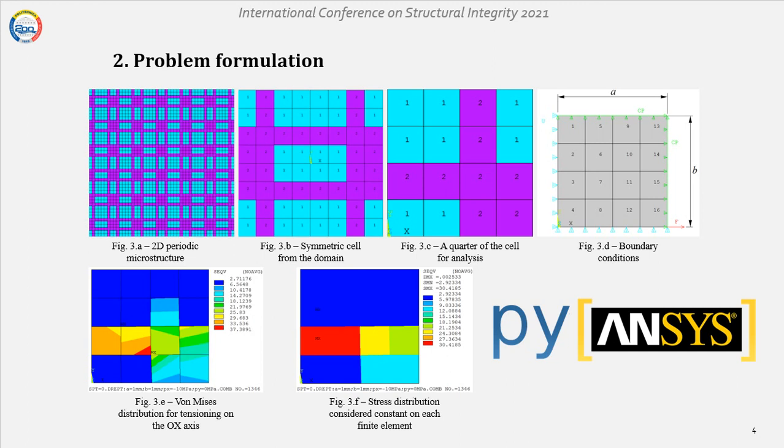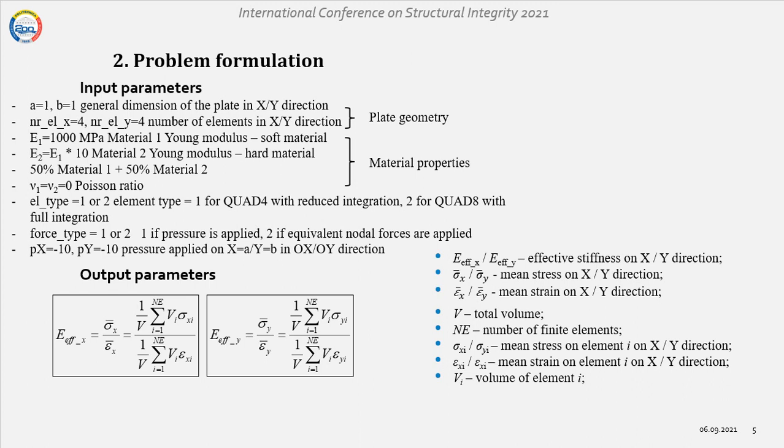For a linear elastic analysis, the stress distribution for each finite element is variable if we do not consider a reduced integration element or a stress mediation on the whole element. But for simplification, we consider that the stress is constant on each element as you can see in figure 3F. In order to not differentiate between plane stress and plane strain, we consider that the Poisson ratio for each element is 0. Finite element analysis were performed by using the PyAnsys software under a MIT license.